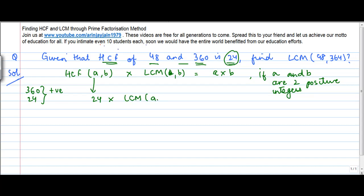...is equal to 24 into 360, the multiple of these two numbers themselves, right? If this formula were to hold good, so we divide both the sides by 24, so this 24 knocks off.